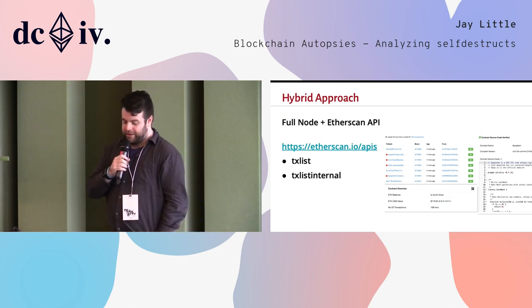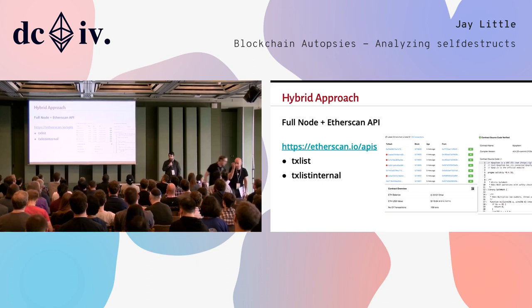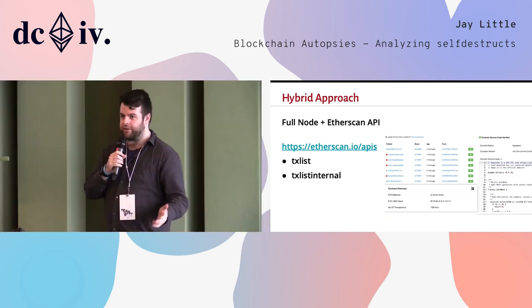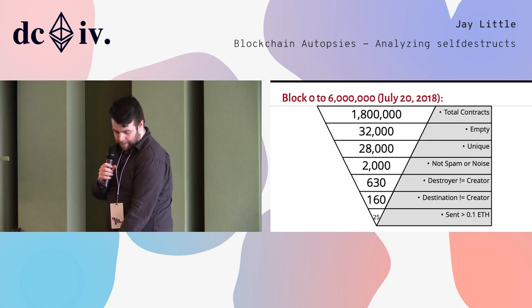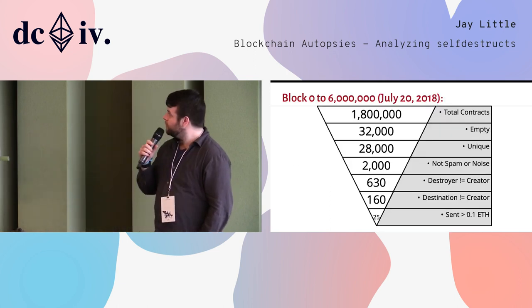I still wanted to make some results, so luckily Etherscan has an API that will give you a list of all the transactions to a contract and all the internal transactions too. It took about a few hours to download. Etherscan lets you do about five queries per second.